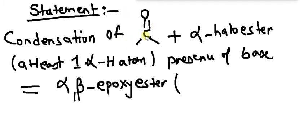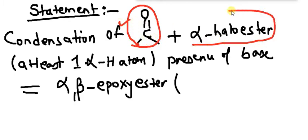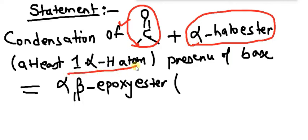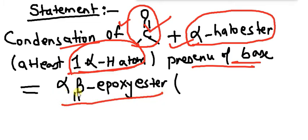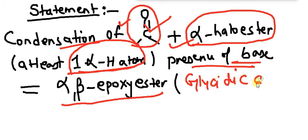In this statement, first we look at it as a condensation reaction. A condensation reaction requires something like a carbonyl group. We also need to react it with an alpha-haloester. The alpha-haloester must have at least one alpha-hydrogen atom. If you find any alpha-haloester compound which does not have an alpha-hydrogen atom, then that compound will not participate in Darzens reaction. This condensation reaction between a carbonyl compound and an alpha-haloester occurs in the presence of a base, and the product formed is called alpha-beta epoxy ester, commonly known as glycidic ester.